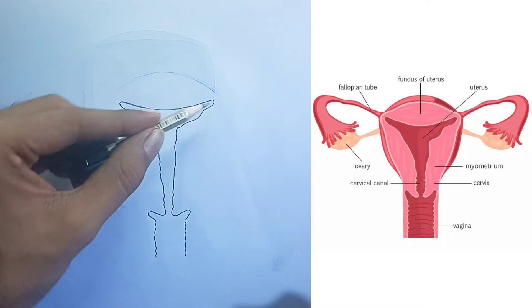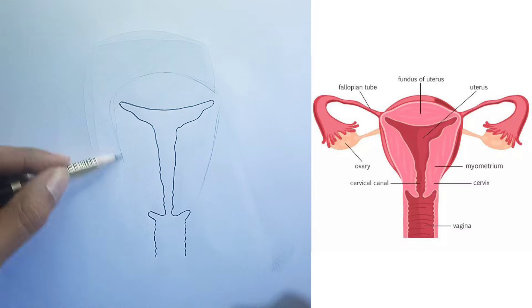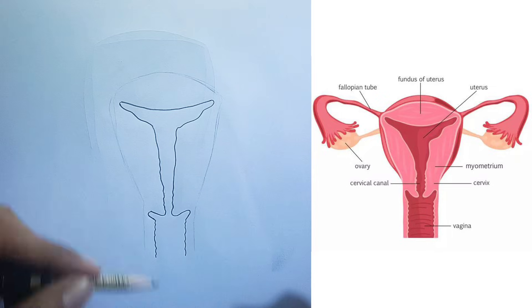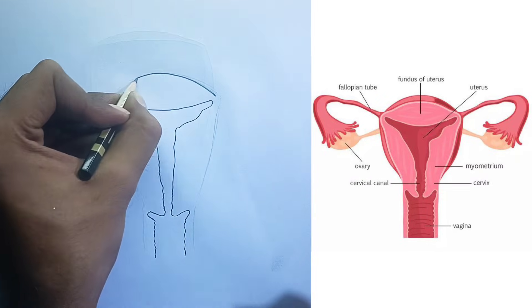Ovary. These are two small, oval-shaped glands located on either side of the uterus. The ovaries produce and release eggs, ova, and also produce female hormones like estrogen and progesterone.